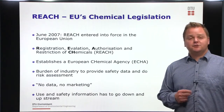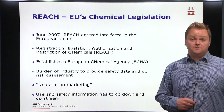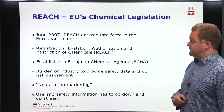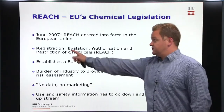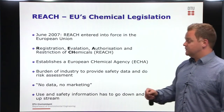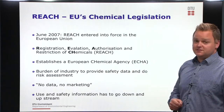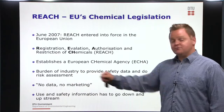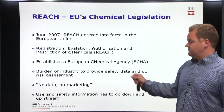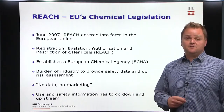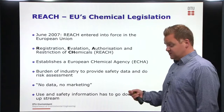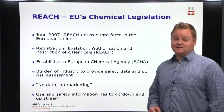A good example of command and control regulation is Europe's chemical legislation known as REACH. REACH was implemented in June 2007 and entered into force. REACH stands for Registration, Evaluation, Authorization and Restriction of Chemicals. The legislation first of all establishes a European Chemical Agency. It puts the burden on industry that is producing or importing chemicals to Europe to provide safety data and do the chemical safety assessment of the chemicals that they produce and import. If they fail to provide this data, then a no data, no marketing principle follows.